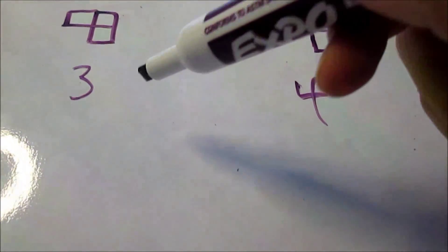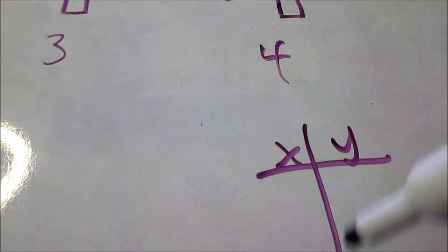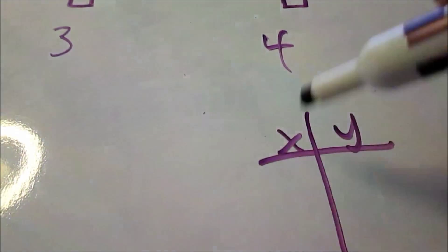This time, instead of using figure number and number of blocks, or n and f(n), I'm going to use x and y. Remember they all can be used. Different labels for these two columns can be used.